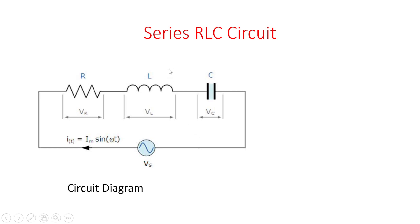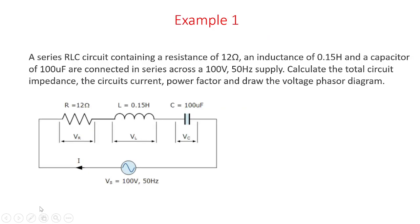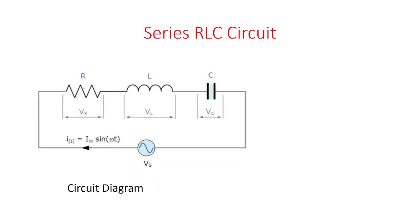First of all we understand its name — series RLC circuit. It means a circuit which consists of a resistor, inductor, and capacitor, and all the components are connected in series. A voltage source is applied across them. The current flowing in the circuit is the same current that is flowing in the resistor, inductor, and capacitor because all components are connected in series. Therefore, current will not divide in the components.